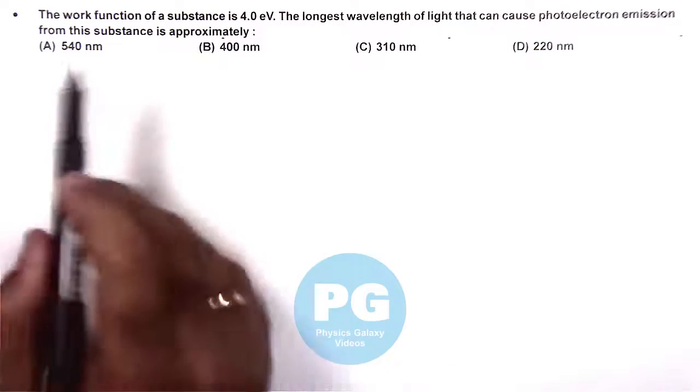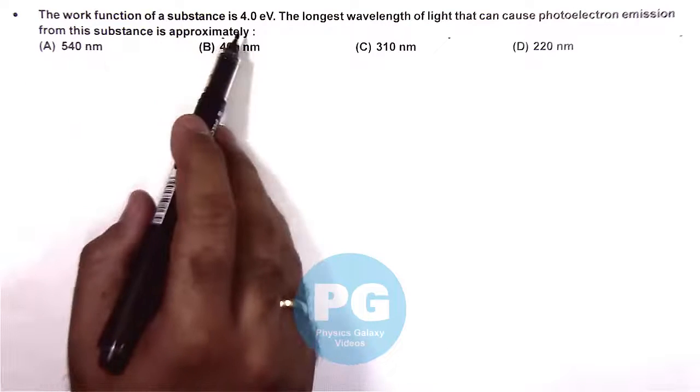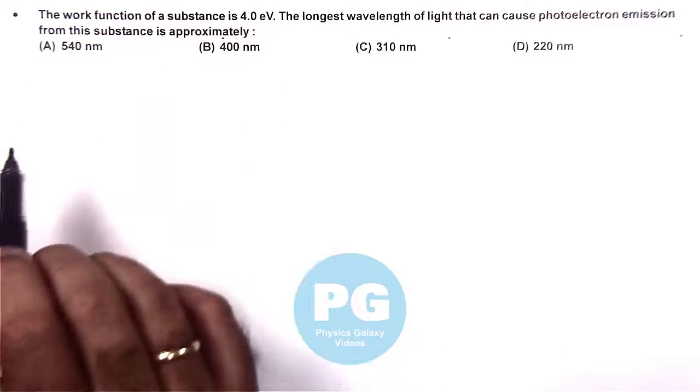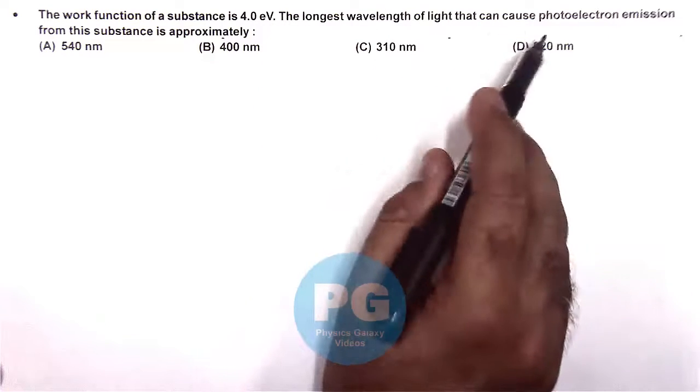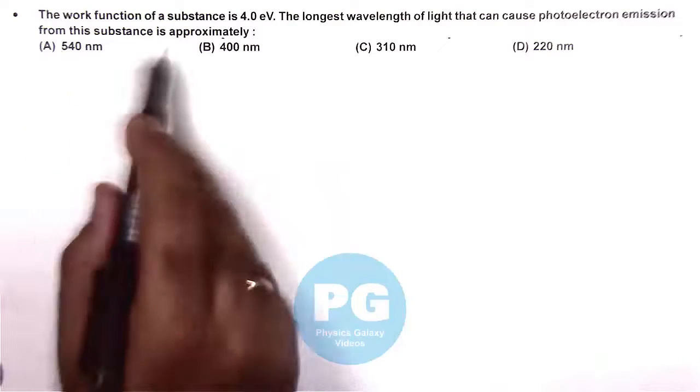In this question, it says that the work function of a substance is 4 electron volt. And we are required to calculate the longest wavelength of light that can cause photoelectric emission from this substance approximately.